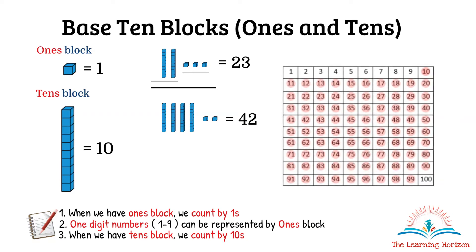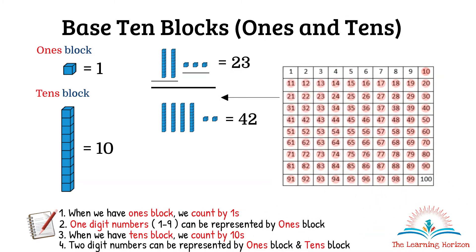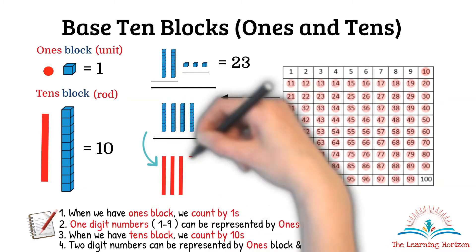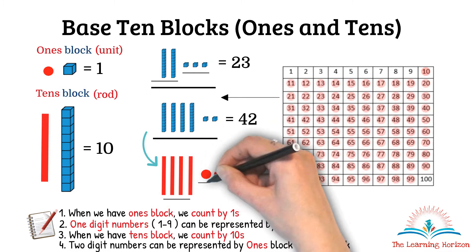All two-digit numbers can be represented using ones and tens blocks. A ones block is also called a unit, and can also be represented as a dot. A tens block is also called a rod, and can be represented as a stick. For example, a number can be represented in the form of sticks and dots, where sticks represent tens and dots represent ones.